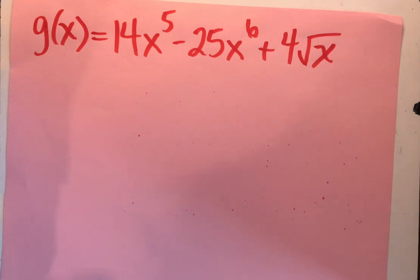Here's our last one. g of x, 14 x to the 5th minus 25 x to the 6th plus 4 times the square root of x. Again, I've got that square root of x similar to the 1 over x. I could write the 1 over x as x to the negative 1. How can I rewrite square root of x so I have exponents?